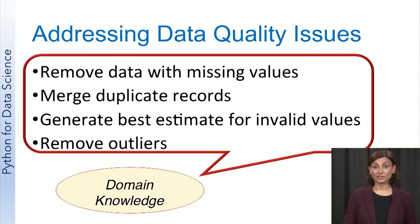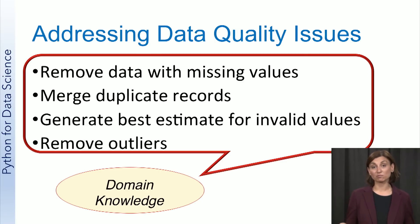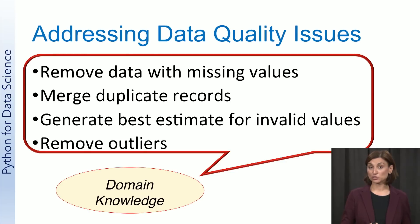In order to address all these data quality issues effectively, knowledge about the application — such as how the data was collected, the user population, the intended uses of the application, etc. — are important. This domain knowledge is essential to making informed decisions on how to handle incomplete or incorrect data. You also need to be careful about the changes you make to avoid coming to incorrect conclusions, and be sure to keep records of the changes you make.